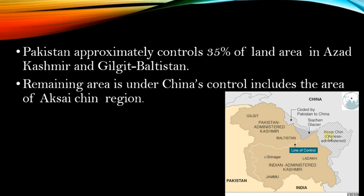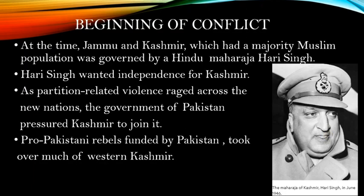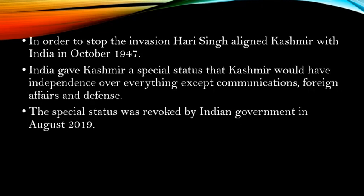At the time, Jammu and Kashmir, which had a majority Muslim population, was governed by a Hindu Maharaja, Hari Singh. Hari Singh wanted independence for Kashmir. As partition-related violence raged across the Indian subcontinent, the government of Pakistan pressured Kashmir to join it. As a result of this pressure and invasion, Hari Singh aligned Kashmir with India in October 1947, because Hari Singh was a Hindu and wanted to align Kashmir with India.